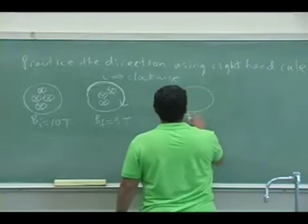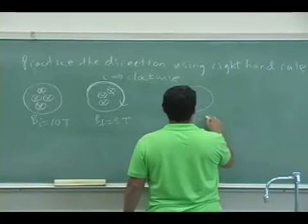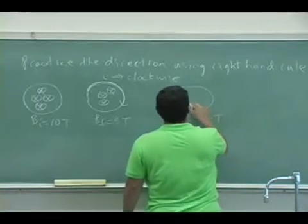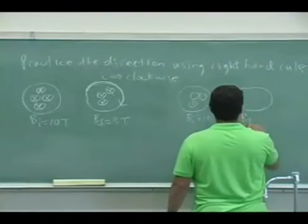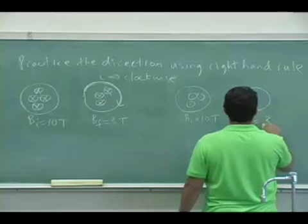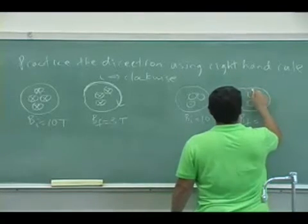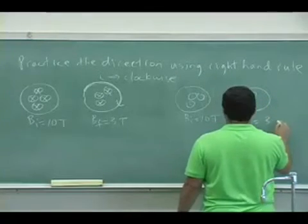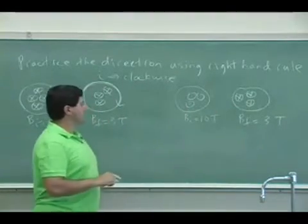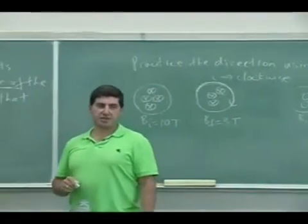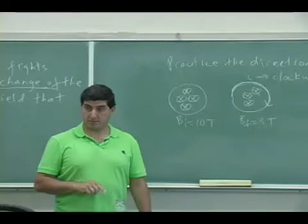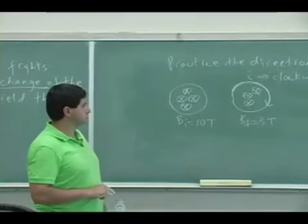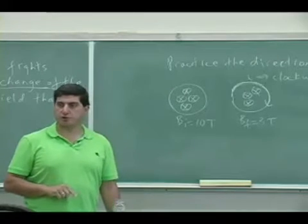We could say B initial was 10 out, B final was 3 in. The B initial is 10 out, B final is 3 in. What's the direction of the induced current?